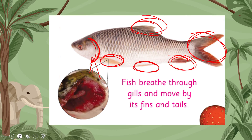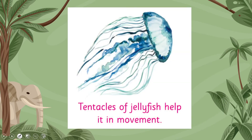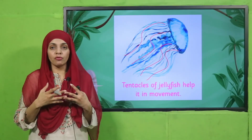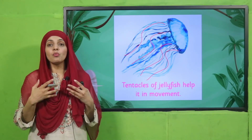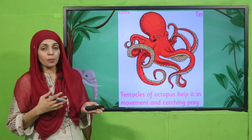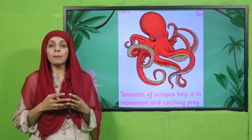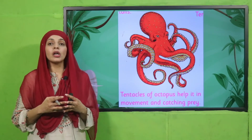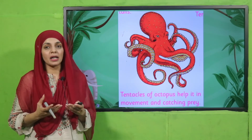This is the jellyfish, and these are its tentacles. Tentacles are a part of the body which help animals move. Different water animals move in different ways. The octopus also has tentacles and they are multi-purpose — they help the octopus move and also help it catch things.